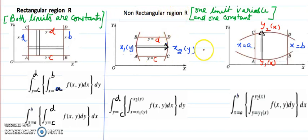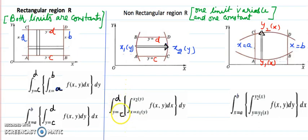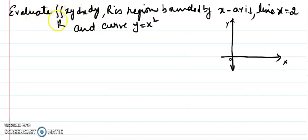That is one important point you should always remember. Also note: which is constant and which is variable depends on the question. One important warning — you will never see that both limits are variable; that is not possible in a double integral. Either both are constant, or one is variable and the other is constant. Now I want to see this with the help of an example. In this question we have to evaluate ∫∫ x·y dx dy over region R, and the limits are not given.